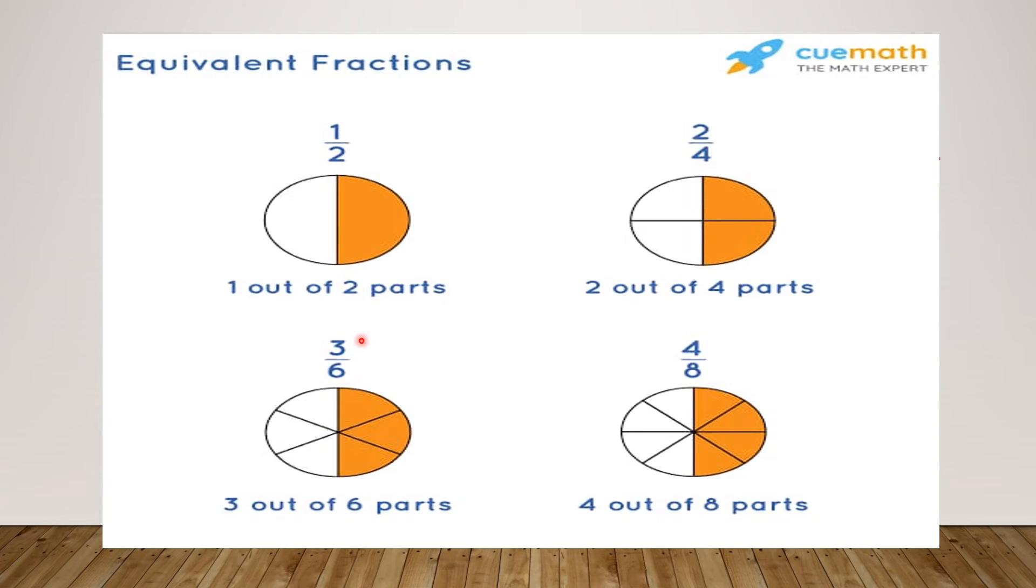The third represents 3 by 6 because 6 parts are there. And the fourth one represents 4 by 8 because 8 parts are there. Total 8 parts are there. And you can see 1 is shaded.